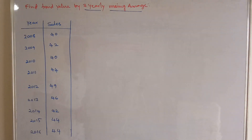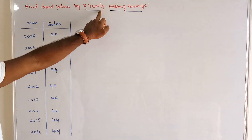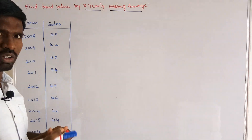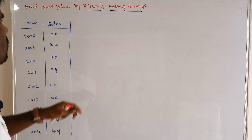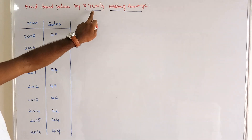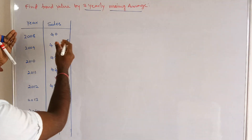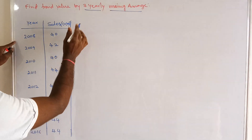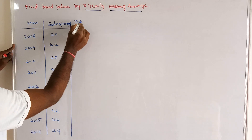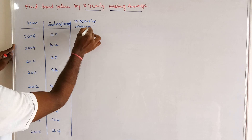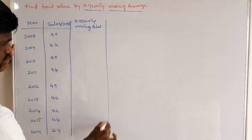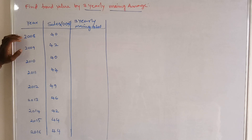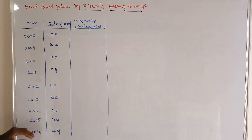Here we find the trend value by three-yearly moving averages. This problem belongs to the moving average method in time series and uses an odd number of years, so we can easily calculate this problem using the odd number of years in the moving average method. The question gives us the years and the sales in thousands, and we have to calculate the three-yearly moving totals.